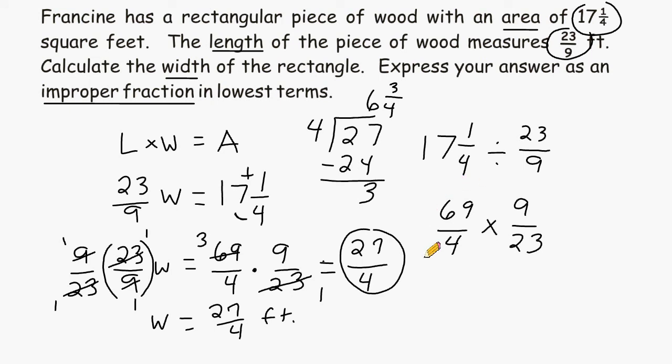And notice at this point we end up basically having the same problem that we did over here when we set up our algebraic equation. Twenty-three can go into itself once. Twenty-three can go into 69 three times, and that leaves us with 3 times 9 for the numerator, which is 27, and 4 times 1 for the denominator, which is 4. So doing this strategy, we would also come up with an answer of 27 quarters.